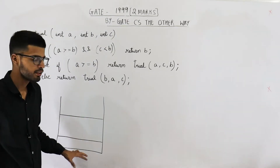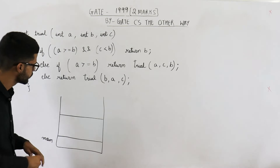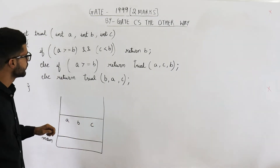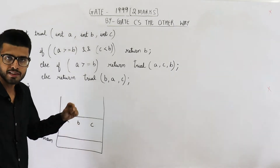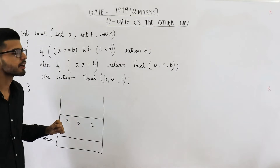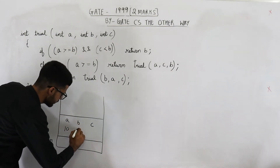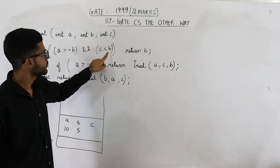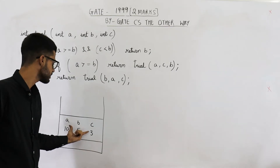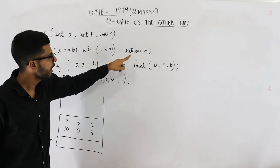I've drawn a stack here. Suppose this is the activation record of the main function, and suppose main calls the function 'trial'. In trial you will have three values A, B and C — they are the parameters of trial. Now suppose from main you pass three values such that the first condition is true. A must be greater than or equal to B, so assume A is 10 and B is 5. And C is less than B, say C is 3. Main passed these values; they will be saved in A, B and C. Whenever the first line is executed this condition will be true and you are going to return B.